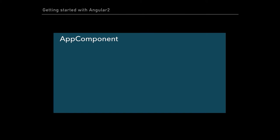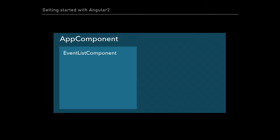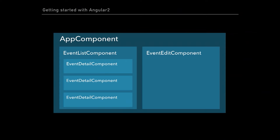Let's look at the architecture. On the root level, we have an app component which is the Angular application itself. It includes an event list component and an event edit component. The event list component in turn includes a set of event details components. Pretty simple.